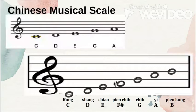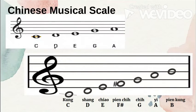Let's look at the Chinese musical scale. The pentatonic scale has only five tones: C, D, E, G, A. Compared to our scale of Do, Re, Mi, Fa, Sol, La, Ti, Do — the pentatonic scale is Do, Re, Mi, Sol, La. There is no F and no Ti.